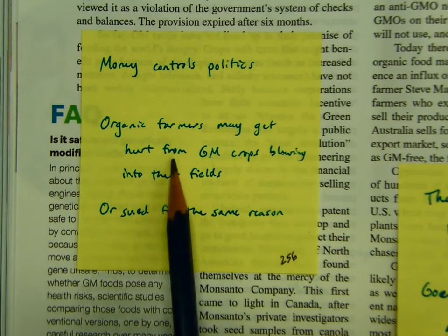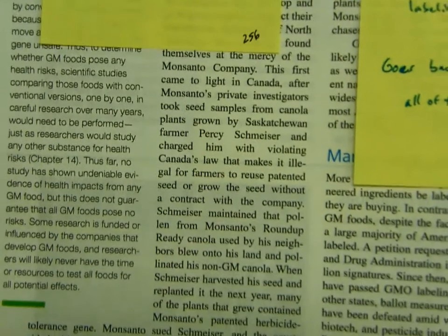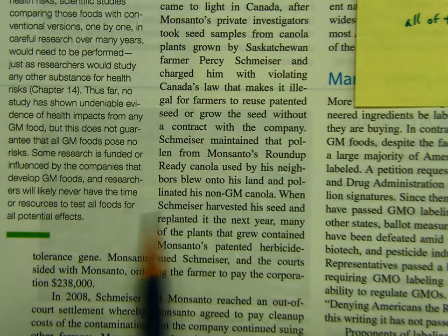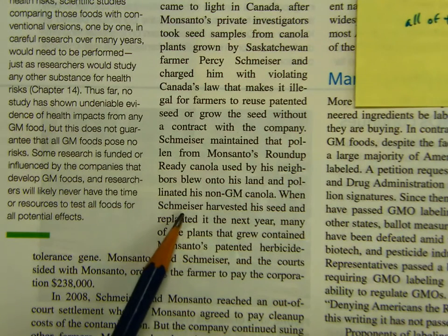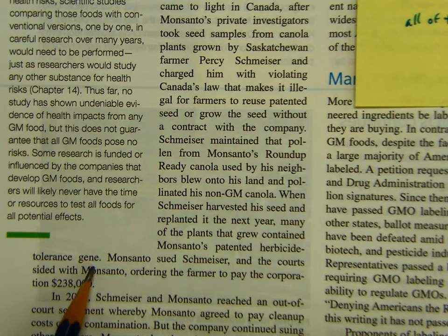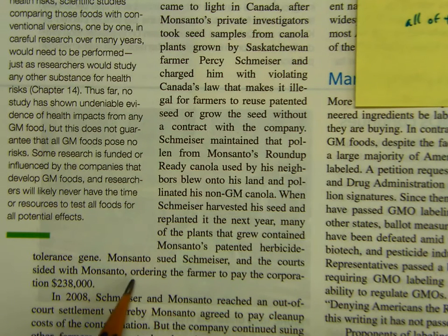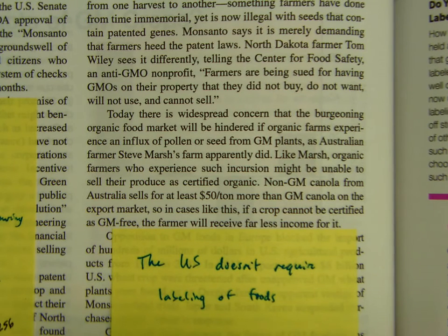Organic farmers may get hurt from GM crops blowing into their fields and then be sued for it. This first came to light in Canada, when Schmeiser, an organic farmer, harvested his seed and replanted it the next year — many plants contained Monsanto's patented herbicide tolerance genes because that pollen had blown into his farm. Monsanto sued him and the court sided with Monsanto, ordering the farmer to pay the corporation $238,000. Farmers are being sued for having GMOs on their property that they did not buy, do not want, will not use, and cannot sell.